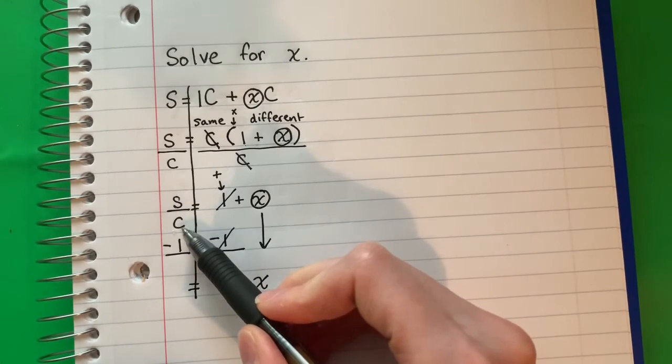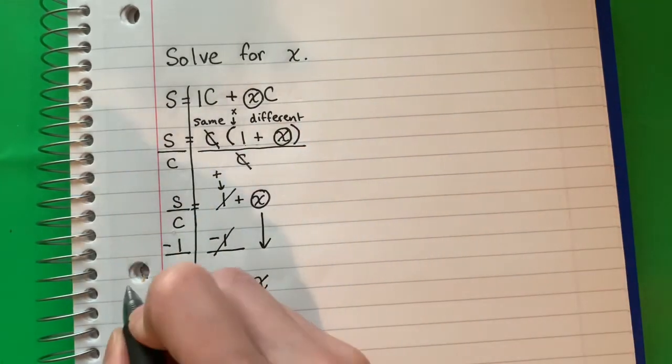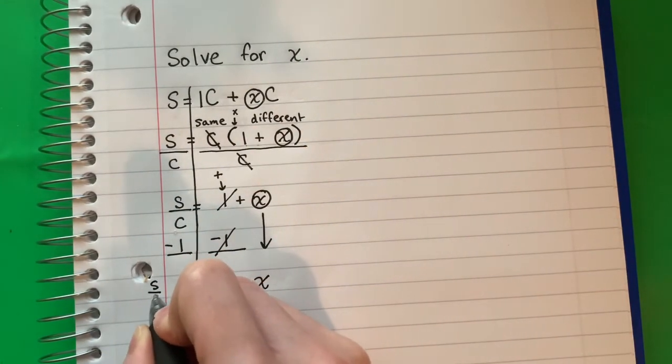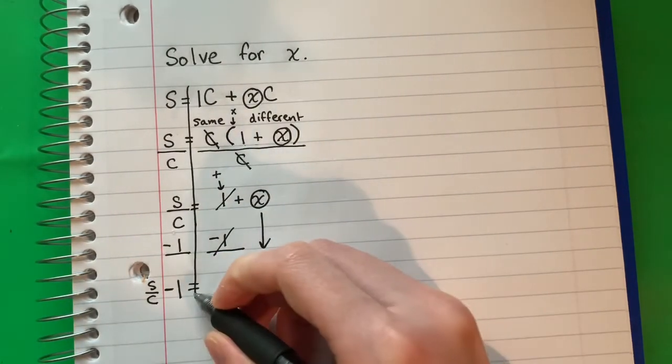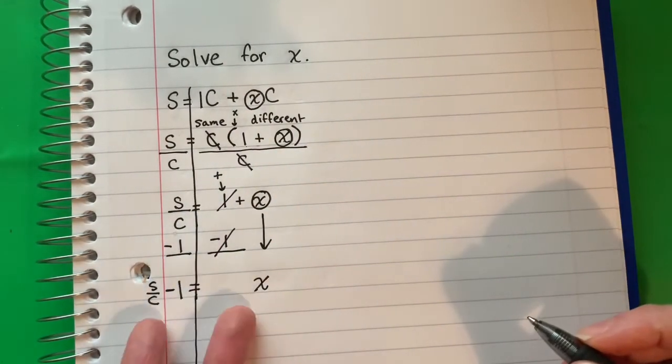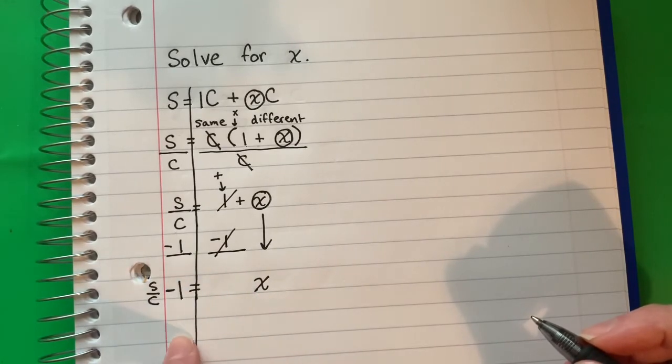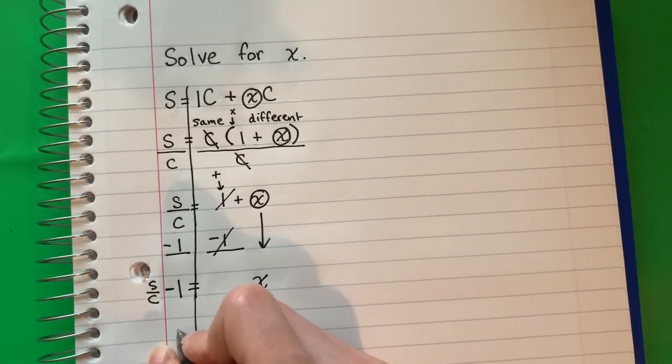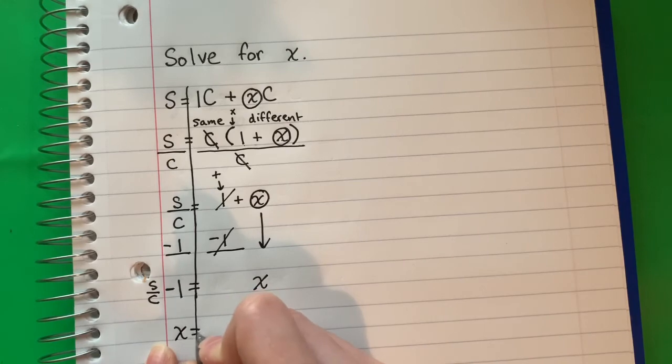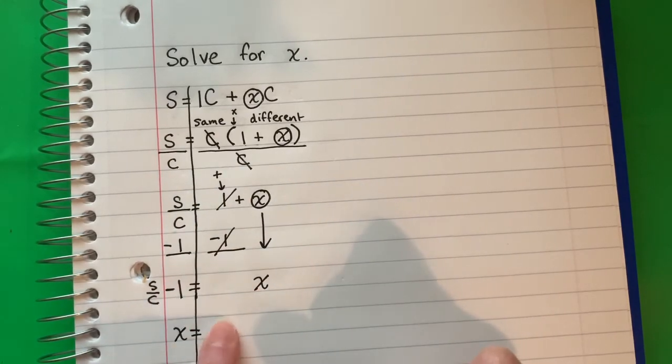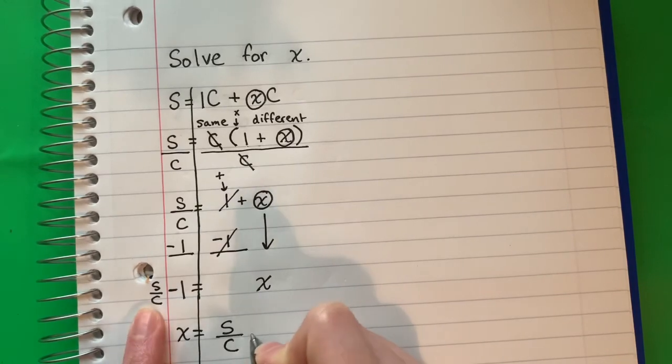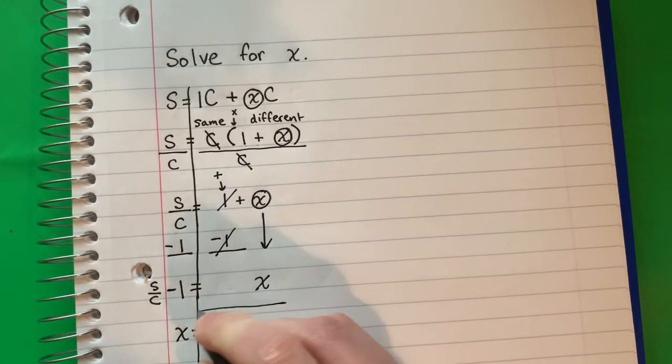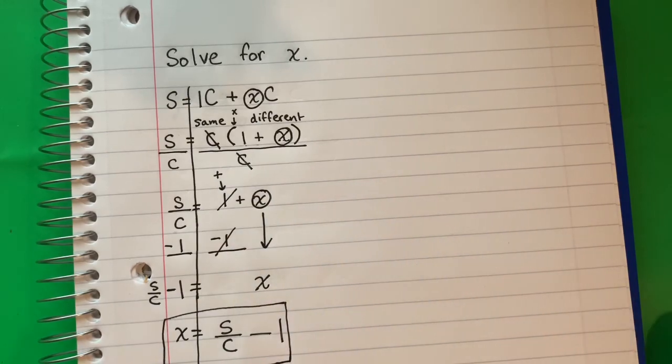Well, it's the same. S divided by c minus one. And I'm going to switch. I'm going to switch because the letter that I want alone has to be by itself in the front, on the left. So x equals copy, copy s divided by c minus one. And this is my answer.